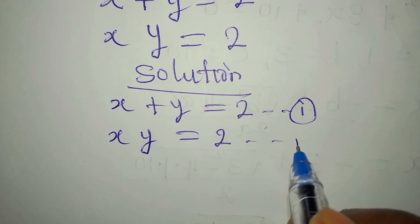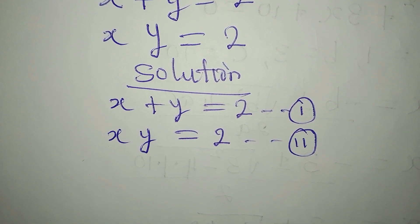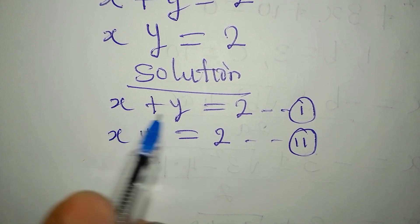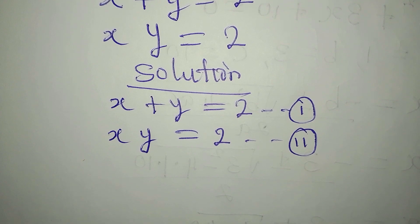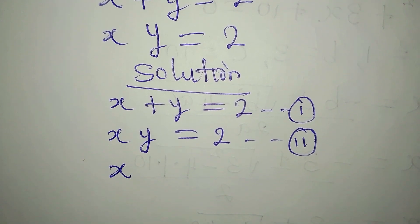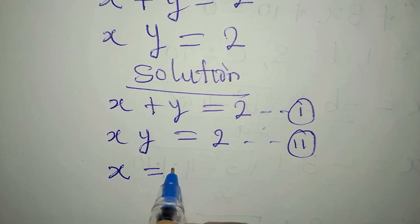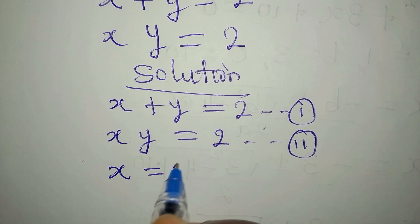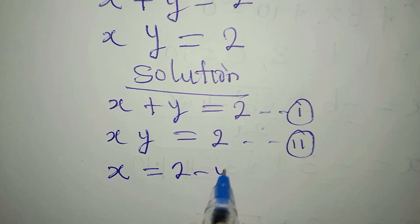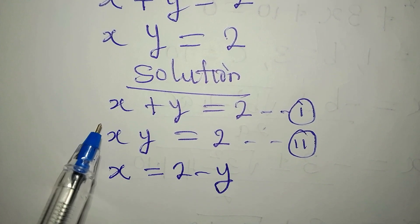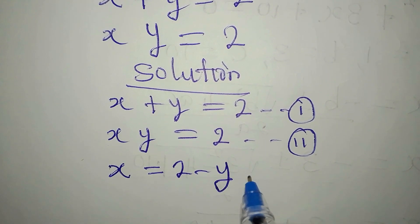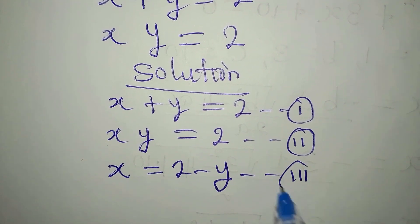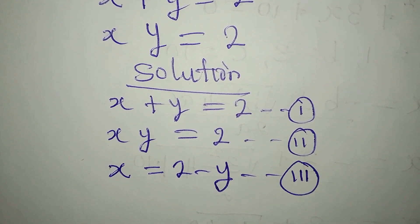This is equation 1 and this is equation 2. From equation 1, let's make x the subject, so x will be equal to 2 minus y. That is from equation 1, and we shall call this our equation 3.